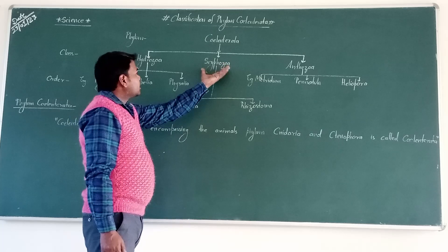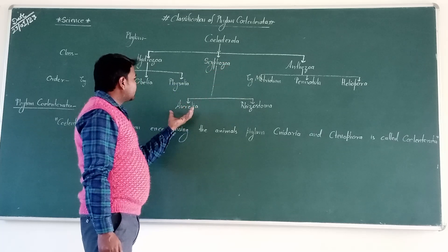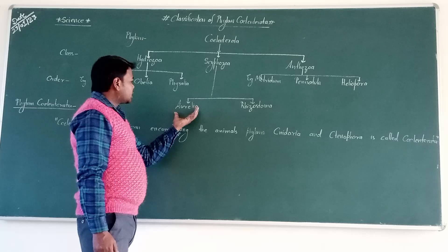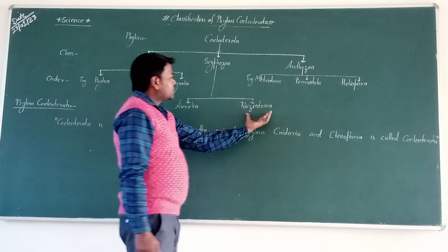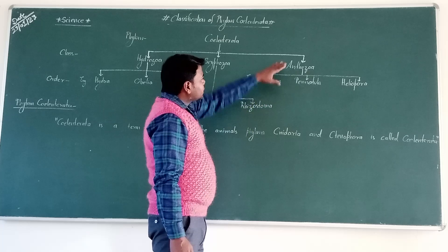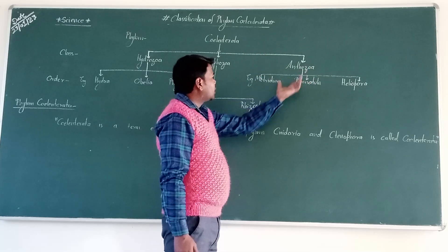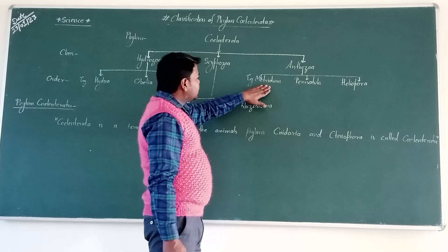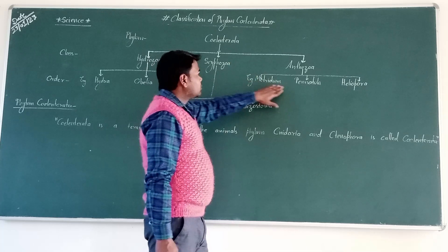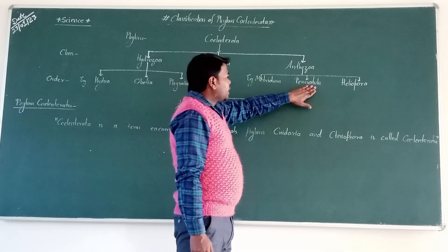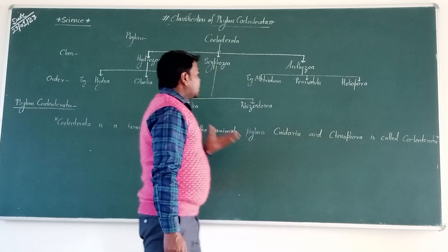Next, Skypo Joga are basically two main orders, which are named as Palyria and Saiso Ispura. And the next class, Enpo Joga, are divided into three main orders, which are named as Metradium, Penedula, and Helo Ispura.